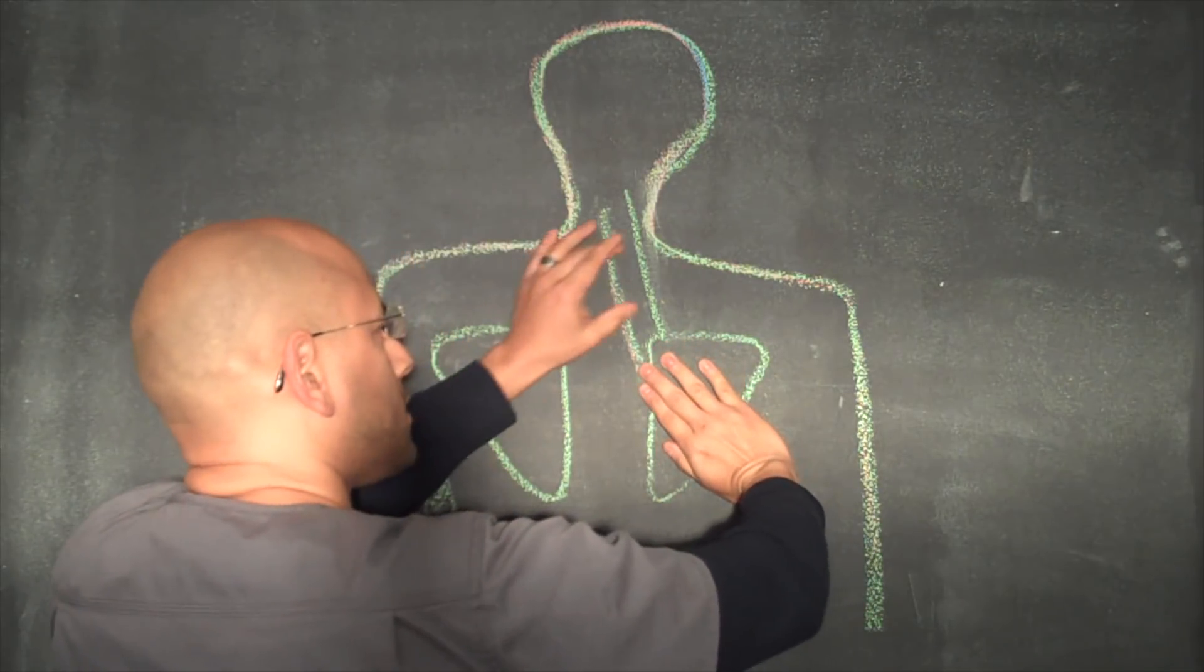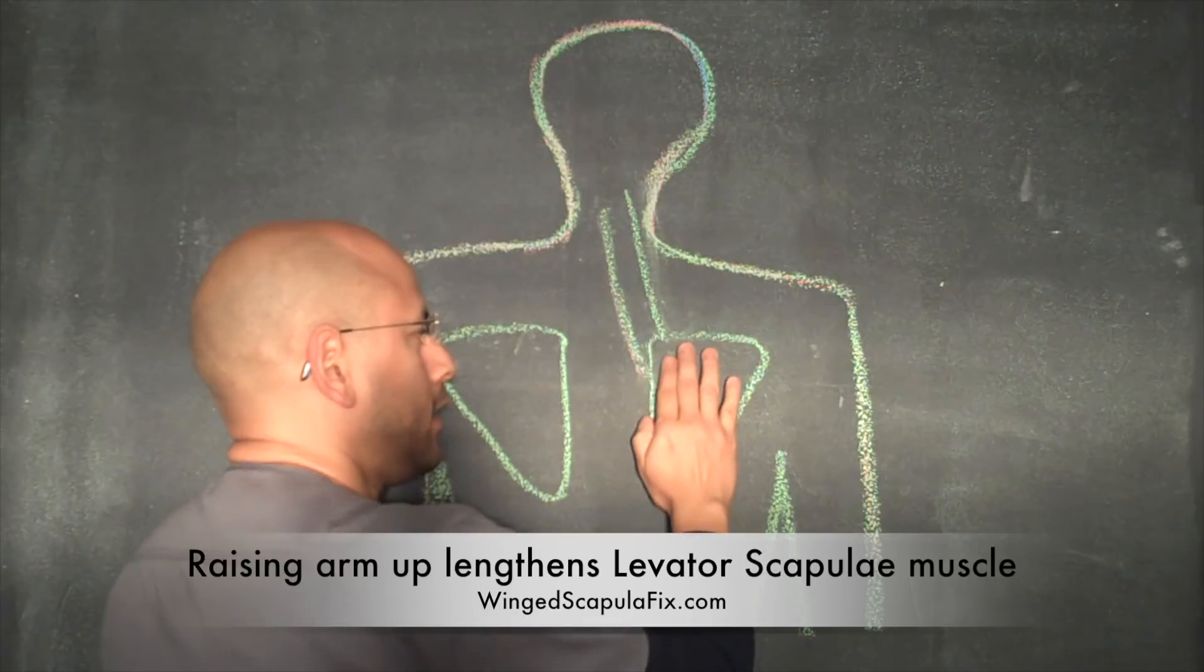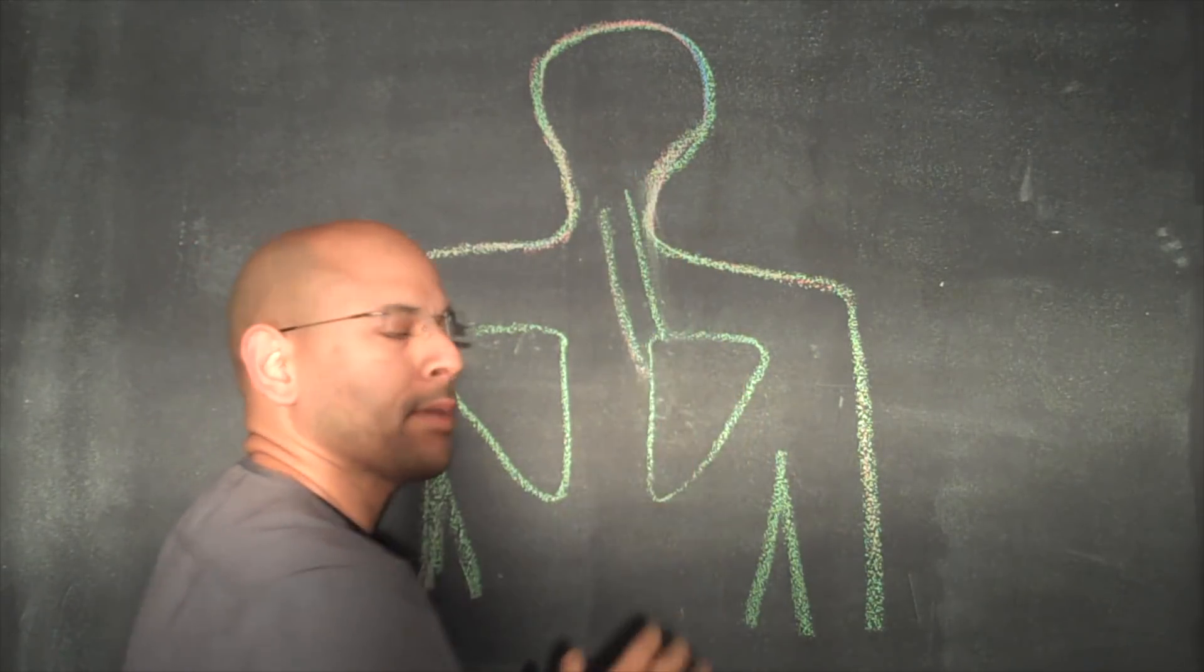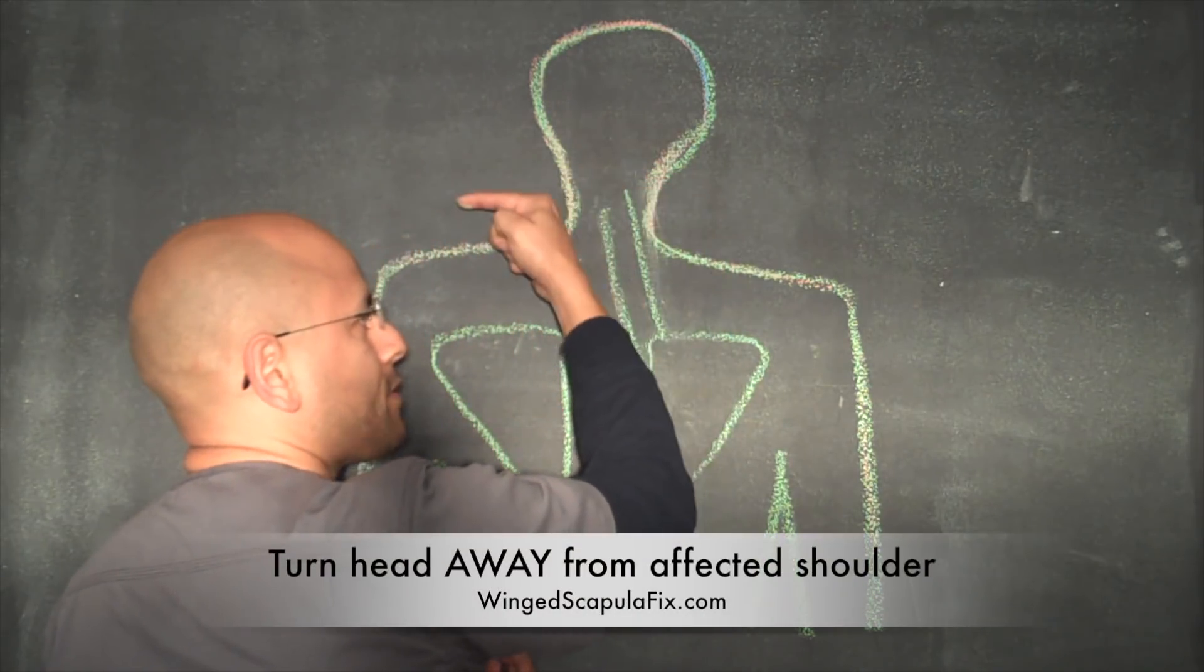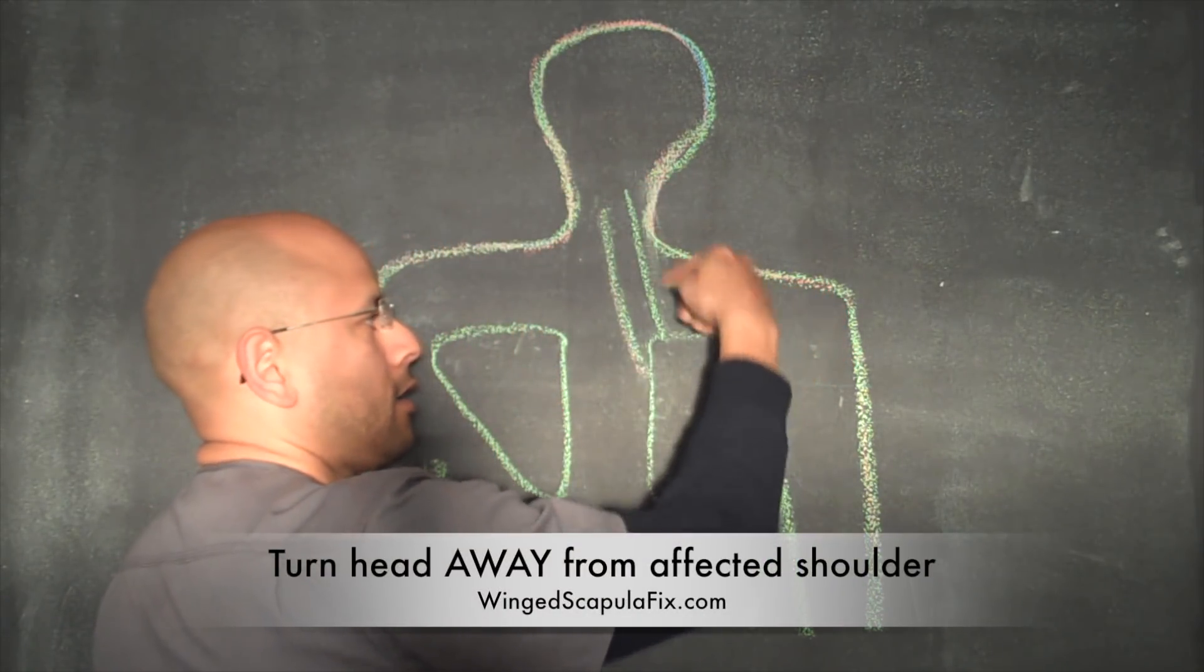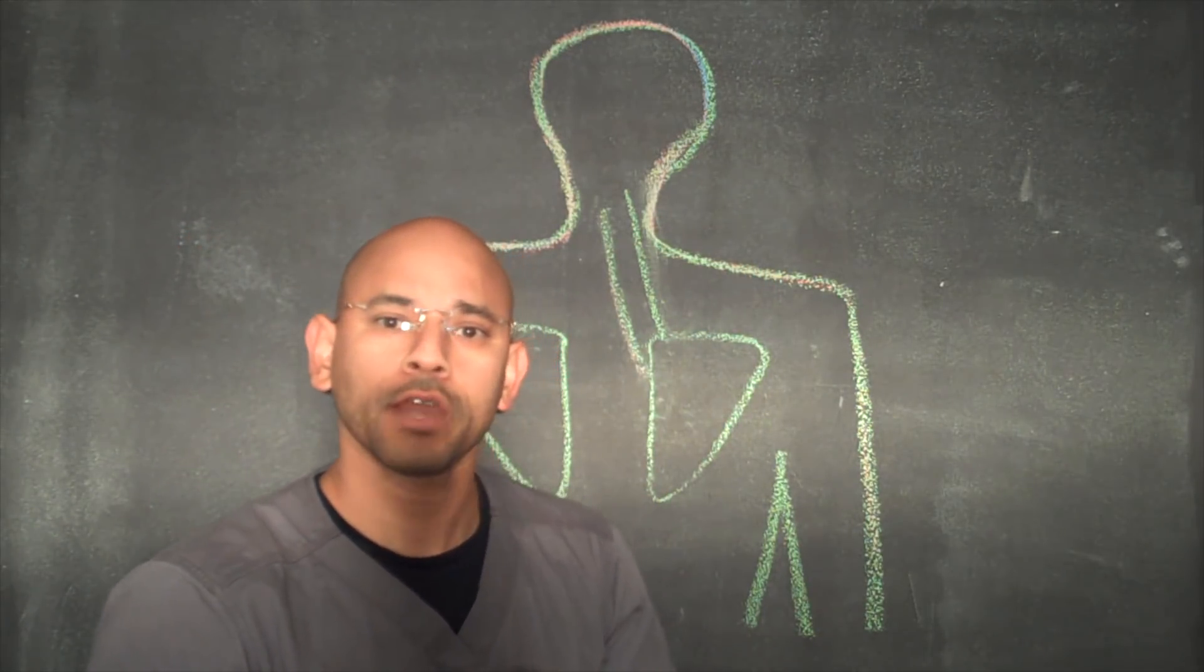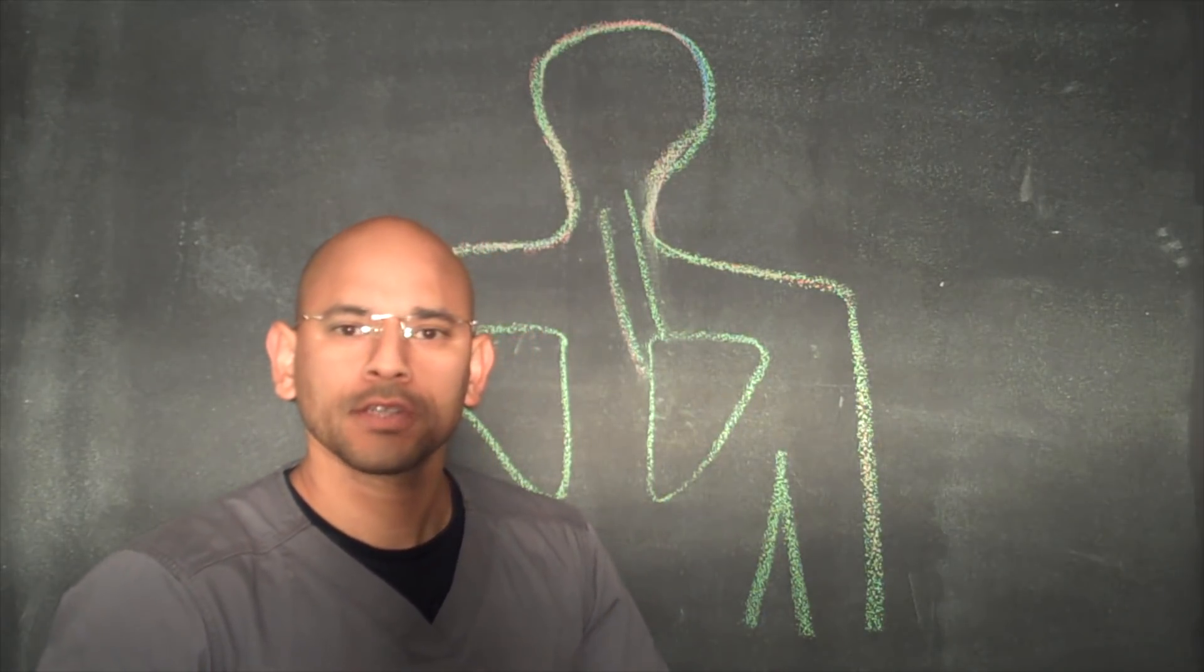So by coming down over here this muscle is lengthening and what you want to do next is not only lengthen this point of attachment here but also the one at the top. So what you want to do there is you want to turn your head opposite from the shoulder that's affected and also look down at a 45 degree angle. That's going to give you the most stretch on the levator scapulae muscle. Now I'm going to show you these two exercises.